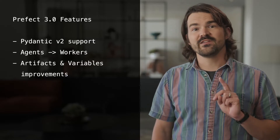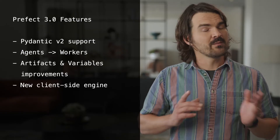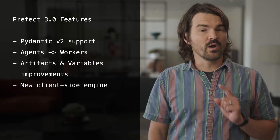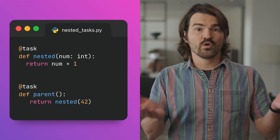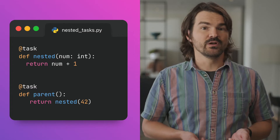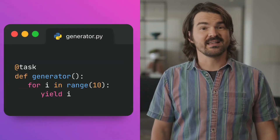Perhaps the most significant quality of life improvement is that we have completely reworked our client-side engine that powers your workflows. Being Pythonic is very much a point of pride for us at Prefect, and we want to ensure that Prefect requires minimal code changes to get up and running. This minimalism has made Prefect a popular choice for teams that build custom work orchestration primitives. In 3.0, Prefect's engine is more performant and more portable than it's ever been. Tasks can now be nested within other tasks, and generators are supported as tasks as well.